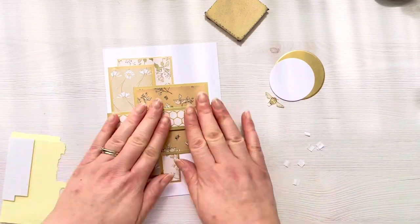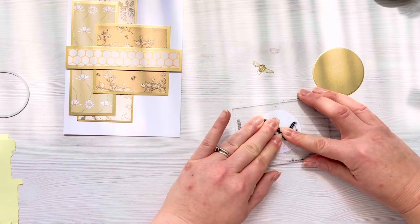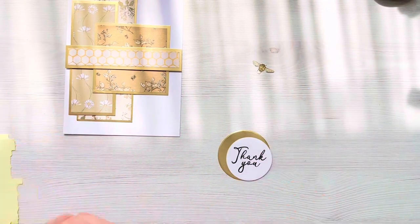I'm just doing the same as before, adding foam pads, and then we're going to stamp the same sentiment and attach that circle down.